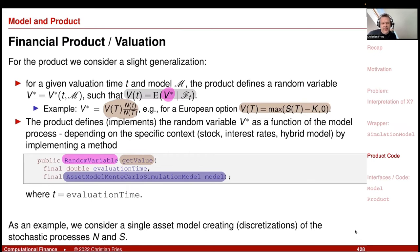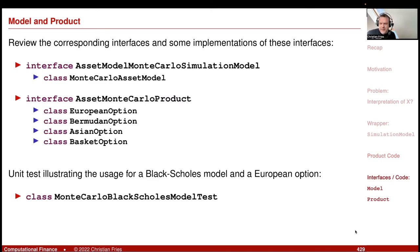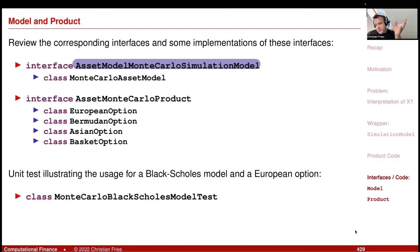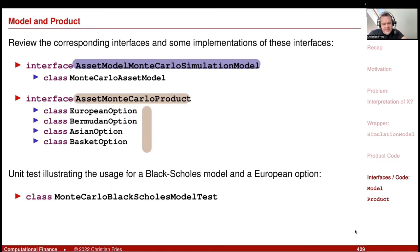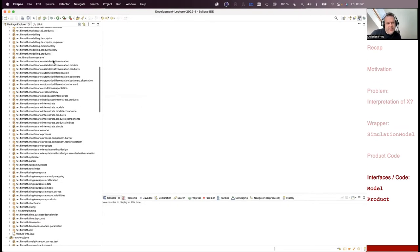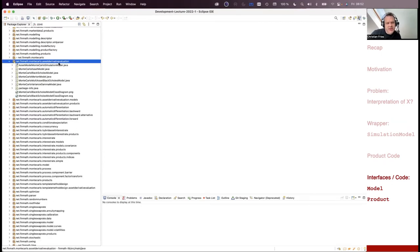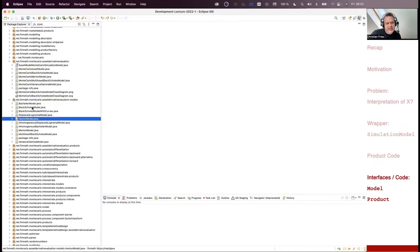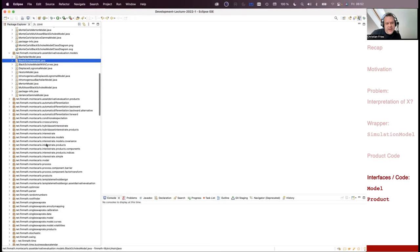Now let's review the wrapper that combines the simulated X with the model to provide the numeraire and the simulated quantities under meaningful names. There is a section for derivative valuation. In the Monte Carlo section, I have models related to single assets like Heston, Bachelier, Black-Scholes, and also interest rate models like Hull-White and the LIBOR market model.